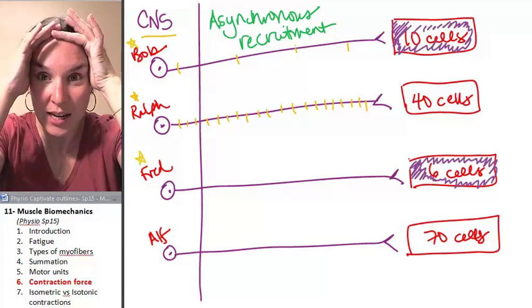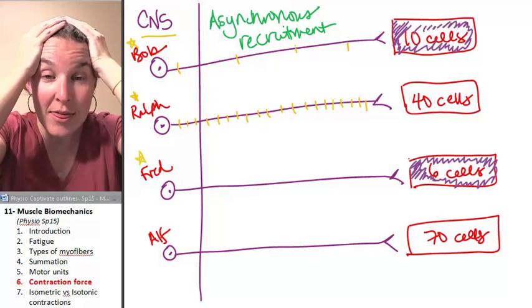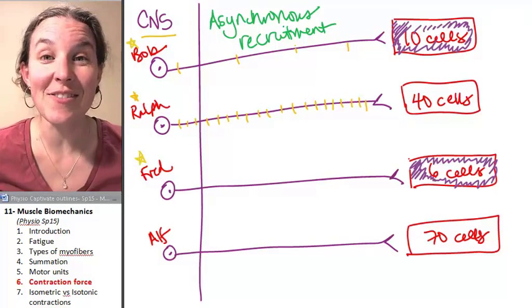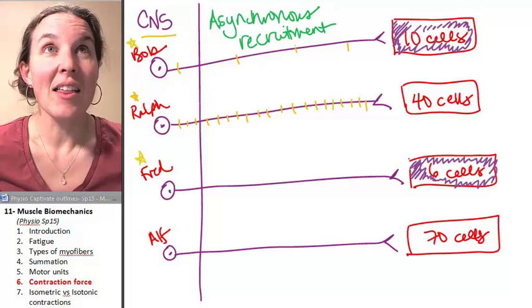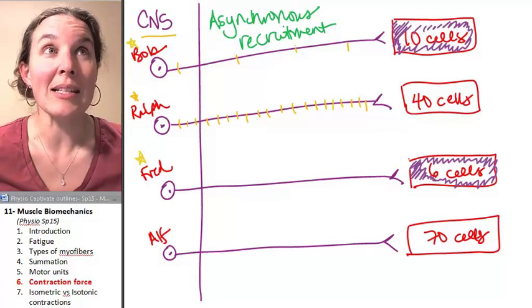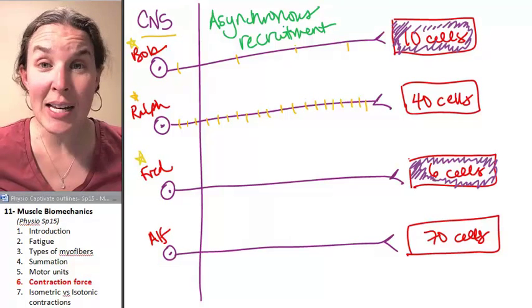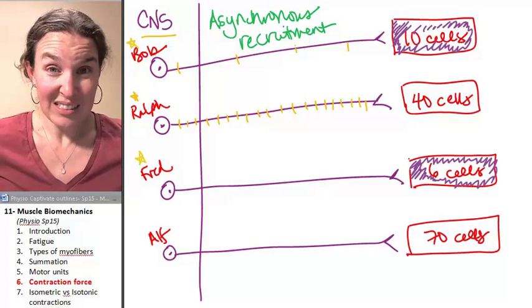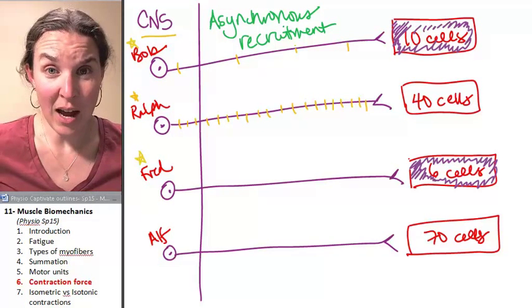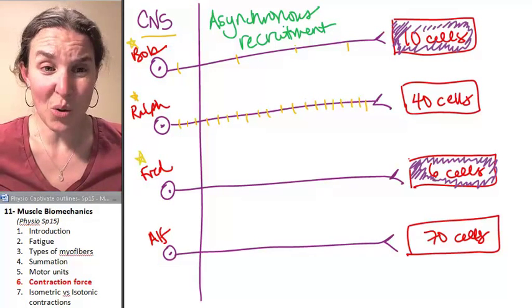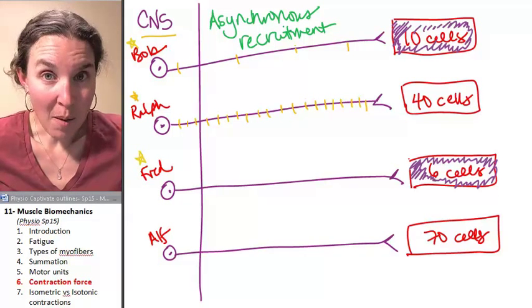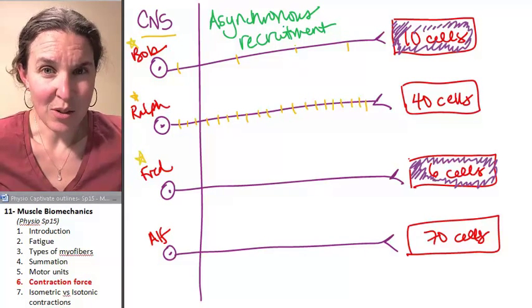Now, think about this for a second. Imagine that Bob, Ralph, Fred, and Alf have to lift a maximal, like something that is crazy. It's so heavy. And the central nervous system knows, okay, we're going to lift 1,000 pounds, fellas, so what are you going to do about it? Do you think any of them are going to be able to not be firing if we're going to try and lift 1,000 pounds?